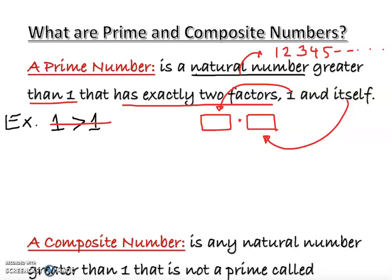Next, is two a prime number? Is two greater than one? Yes. We can write it as two times one — that's how we break it down. We have exactly two factors: one and itself, with no other factors. Therefore, two is a prime number.